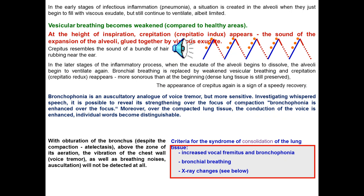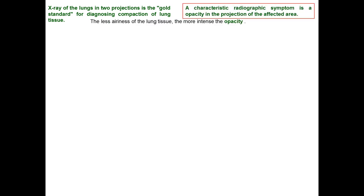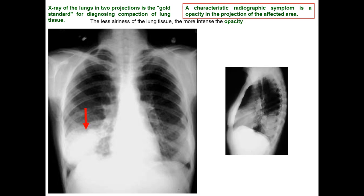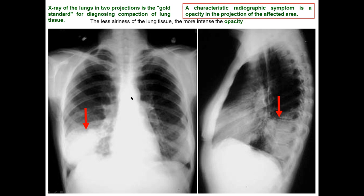The criteria for the syndrome of consolidation of lung tissue are: first, increasing vocal fremitus and bronchophonia; second, change of normal vesicular breathing into bronchial breathing; and third, X-ray changes. X-ray of the lung in posteroanterior projection is the gold standard for diagnosis of compaction of lung tissue. The characteristic radiographic symptom is opacity in the projection of the affected area — the denser the tissue, the greater the opacity. You can see that normal heart tissue is dense and appears opaque, whereas healthy lung tissue should be aerated; instead, in consolidation syndrome we see opacity.